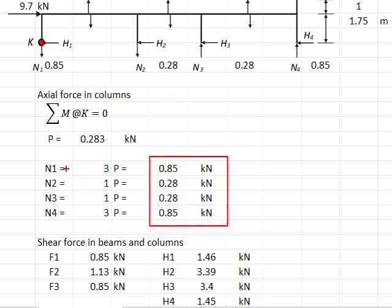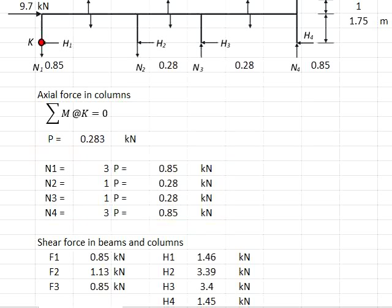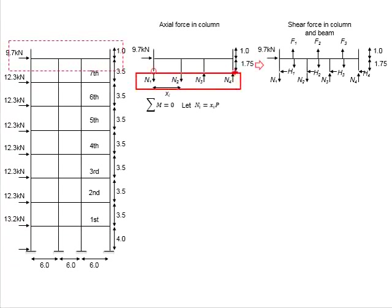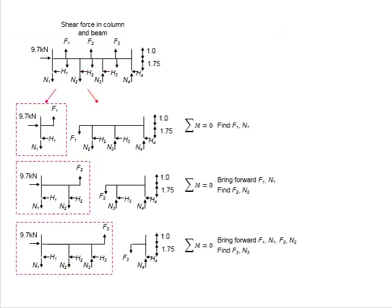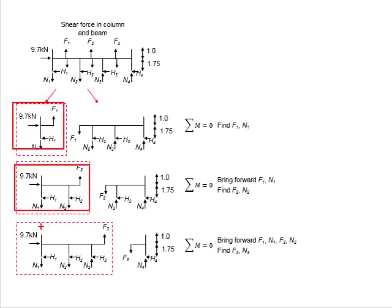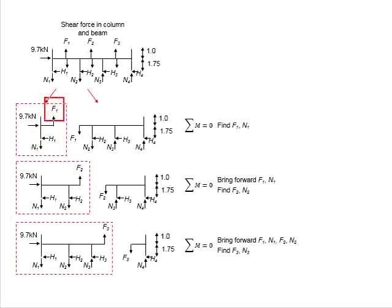From here, you are able to determine the axial forces in the columns as N1, N2, N3, and N4. Once you have obtained these axial forces, your next step is to determine the shear force in the beams and in the columns. This is obtained by cutting the frame structure into several sub-sections. As the sections are cut, the internal forces become external forces. For the section cut here, the left-hand side and right-hand side free body diagrams are identified.